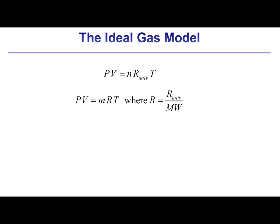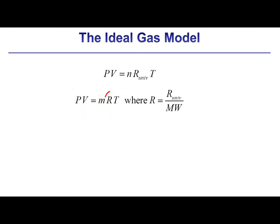The value of the universal gas constant is provided in EES in whatever unit system you specified, using the constant R#. The ideal gas law can also be expressed on a mass basis, where M is the mass of the gas and R is the ideal gas constant expressed on a mass basis, which is just the ratio of the universal gas constant to the molar mass.